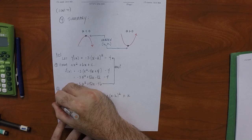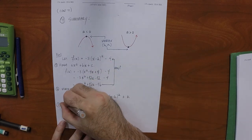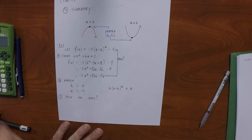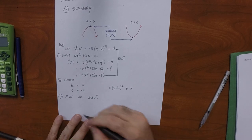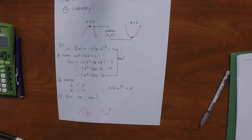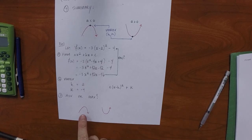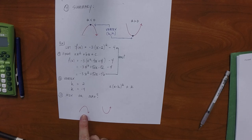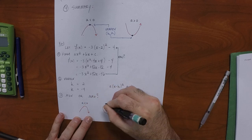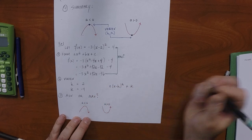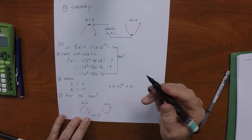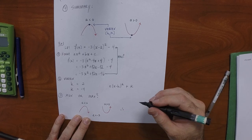I could also ask: does this have a min or a max? If you were to plot this quadratic, which shape would you observe? The one opening downward. Why? Because a is negative. A is negative three. As a result of this, we're going to have a maximum.